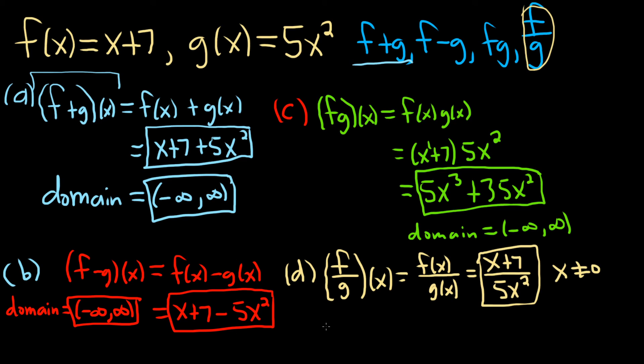So the domain is everything except 0. If you wanted to draw a picture, here's 0. And it's basically everything except this. It's all of these numbers here and all of these numbers here, but you don't include the 0. It's all the numbers up to 0, and you don't include it. Then you start at 0, and you don't include it, and then all the other numbers.